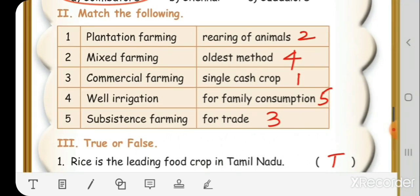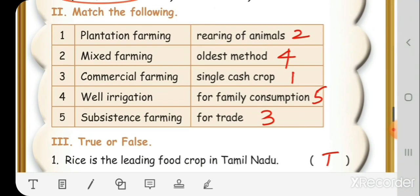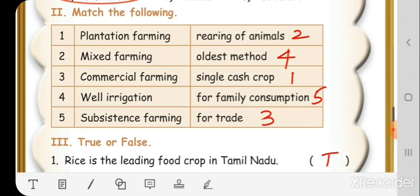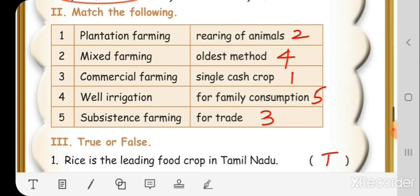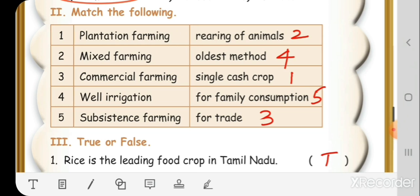Match the following. Plantation farming - single cash crop. Mixed farming - rearing of animals. Commercial farming - for trade. Well irrigation - oldest method. Subsistence farming - for family consumption.